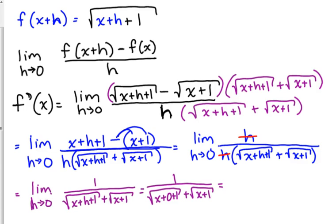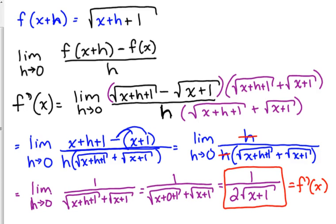Now, we can plug in 0 for h. And what happens when we do that? We just have the square root of x plus 1 plus the square root of x plus 1. That means we have 2 square roots of x plus 1. That is the derivative of this function. That is f prime of x.